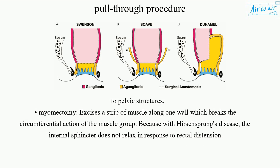Myomectomy: Excises a strip of muscle along one wall which breaks the circumferential action of the muscle group. This is because with Hirschsprung's disease, the internal sphincter does not relax in response to rectal distension.